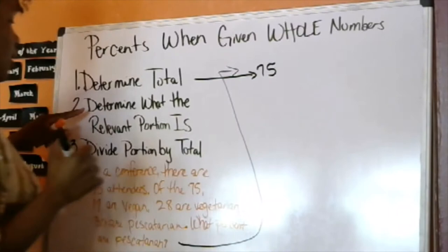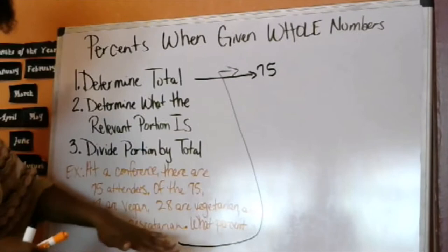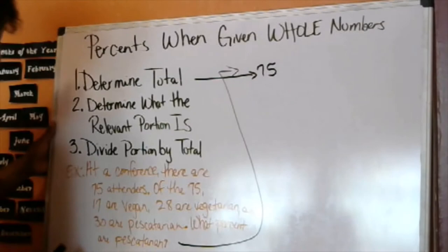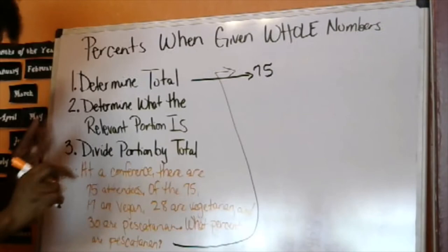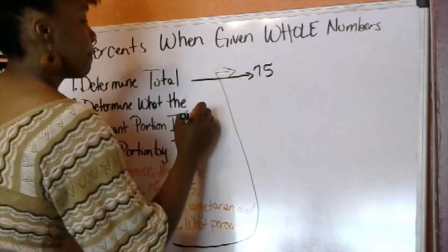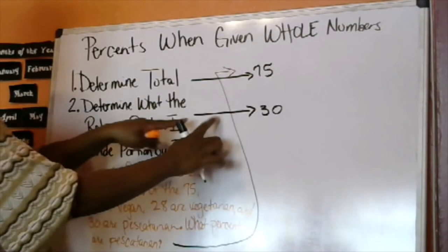Determine what the relevant portion is. We're being asked point blank what percent are pescatarian. And we know that 30, it's written right here, can't miss it, don't have to compute anything, 30 are pescatarian. So, we divide the portion by the total.